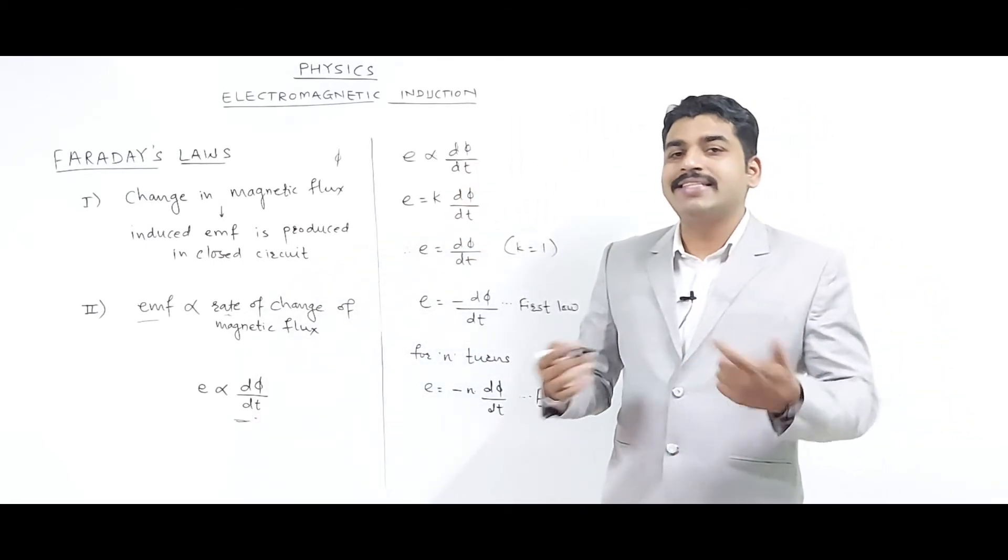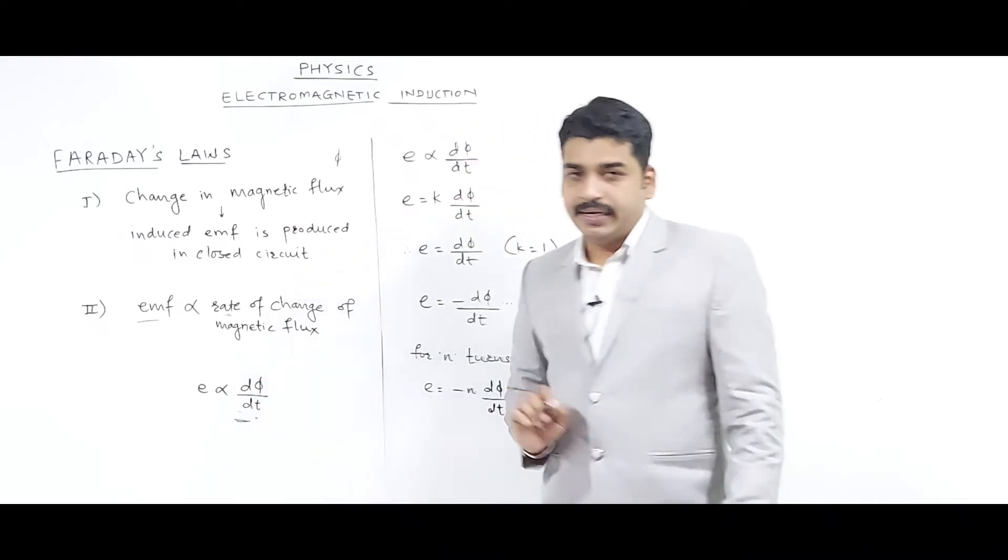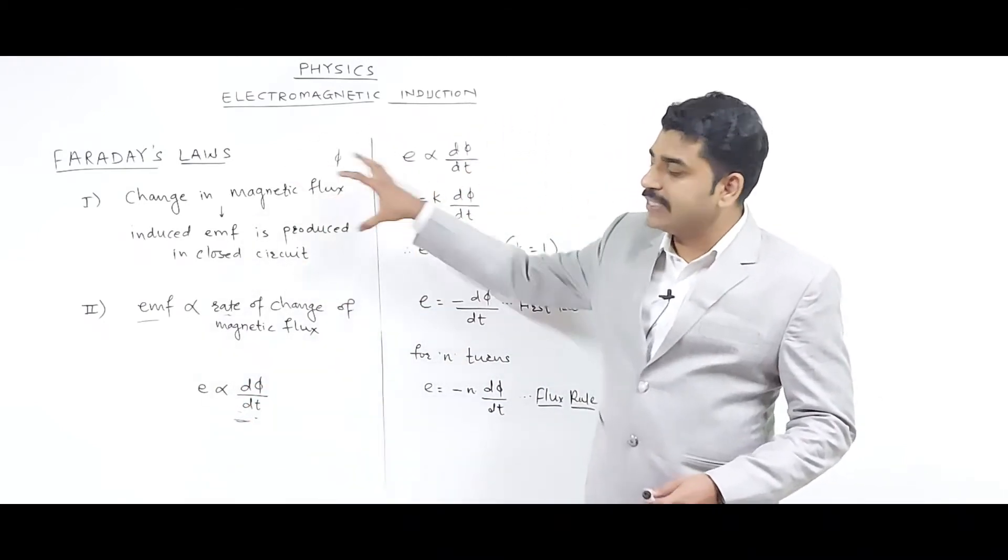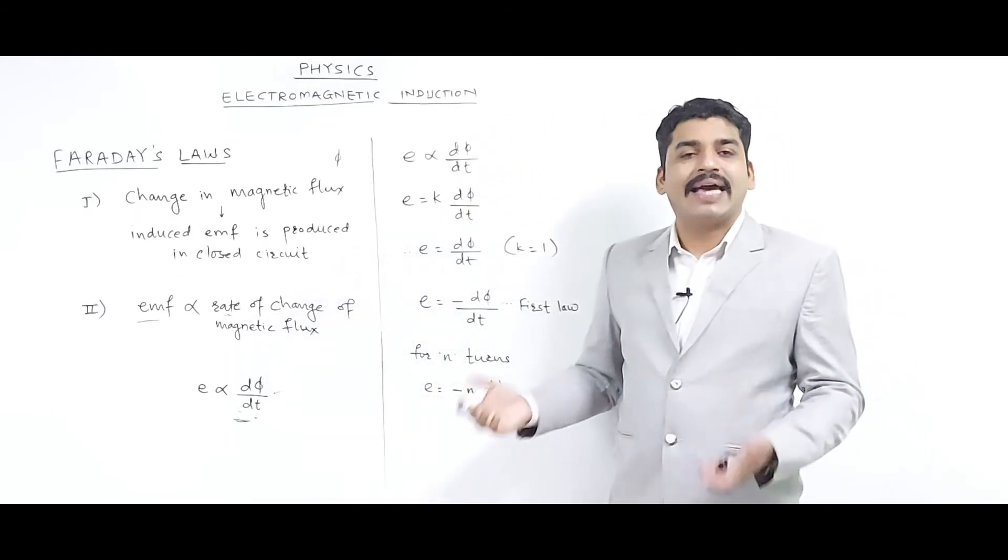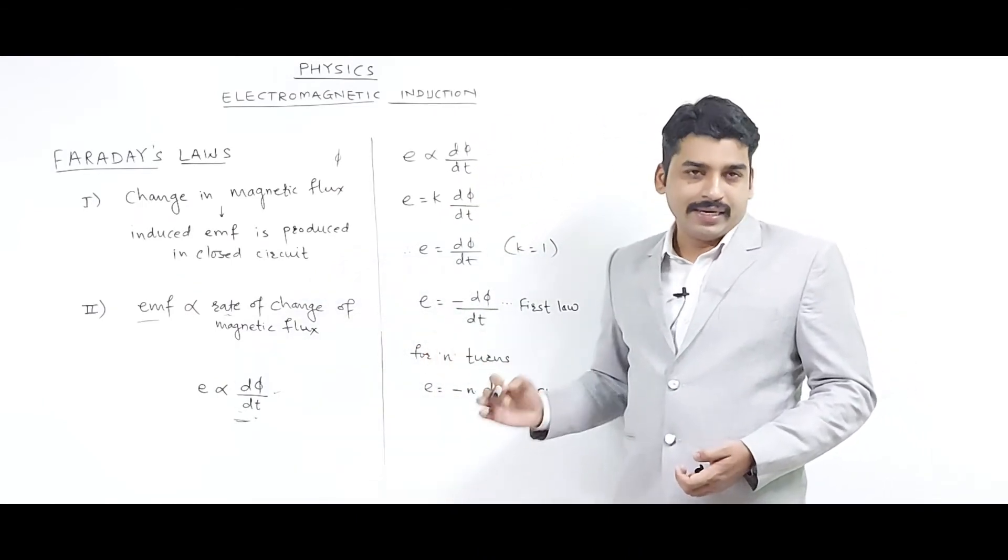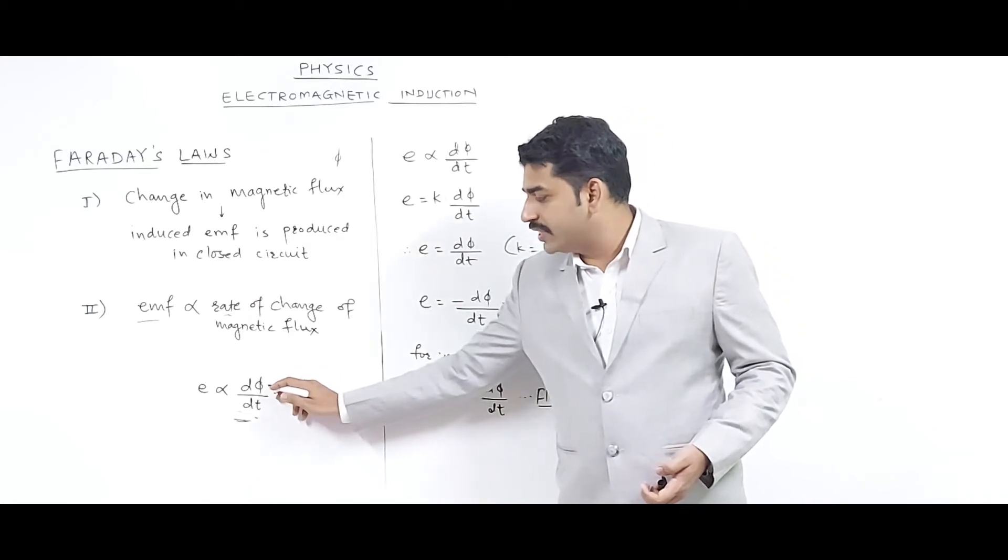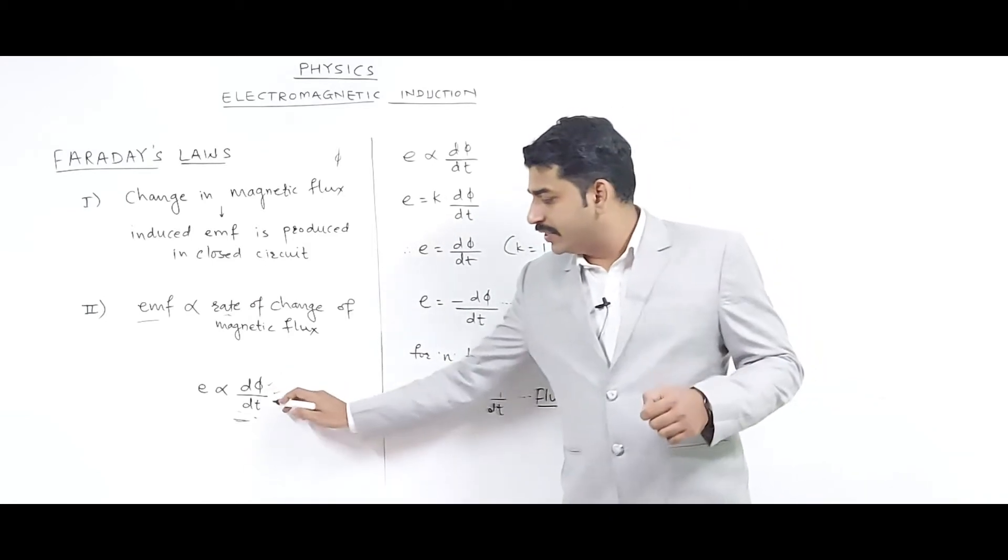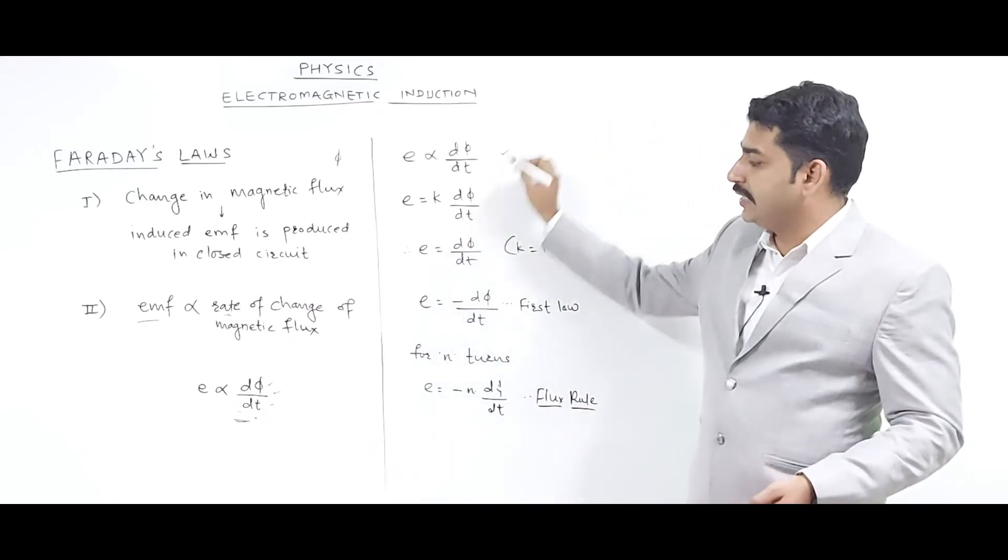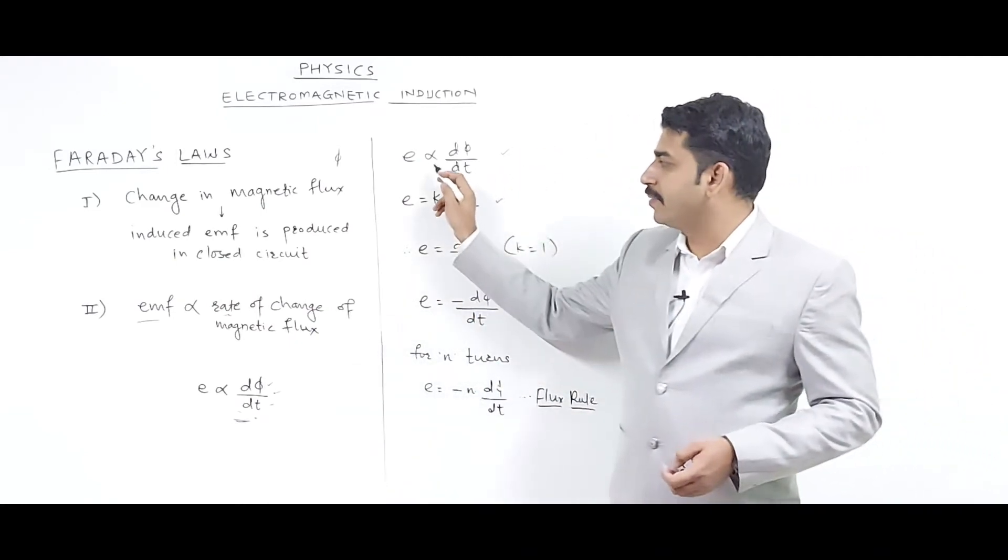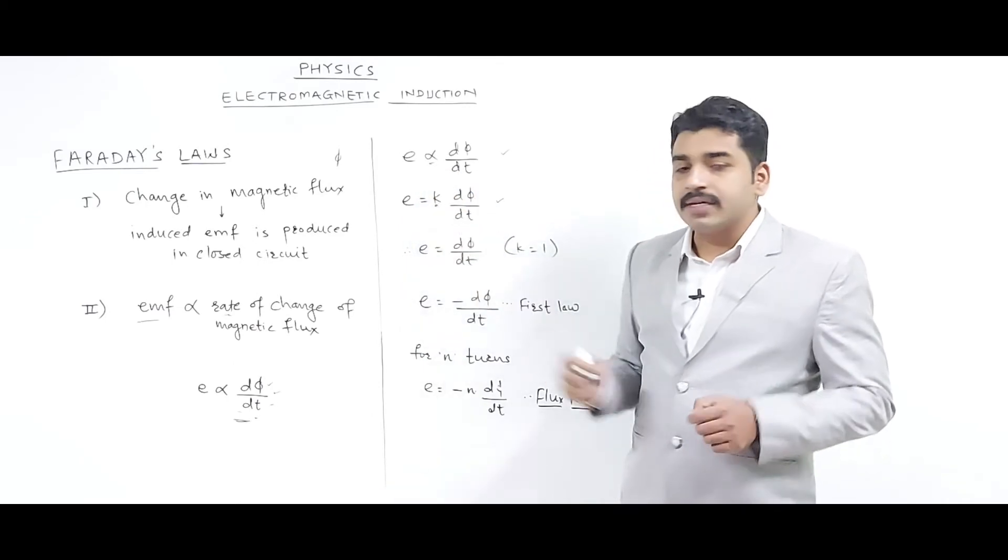To summarize these two laws, we can write: e is directly proportional to dΦ/dt, meaning the rate of change of magnetic flux with respect to time. Now we can modify this statement. If it is directly proportional, there has to be some constant.